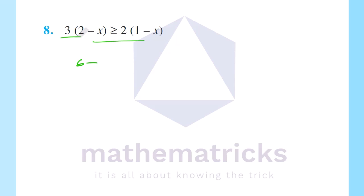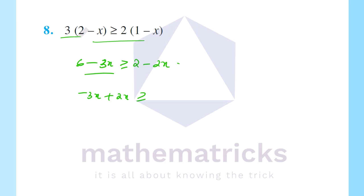6 minus 3x greater than or equal to 2 minus 2x. The x terms: minus 3x plus 2x is minus x. Left is 6 and right is minus 4 after rearranging. So minus x is greater than or equal to minus 4.